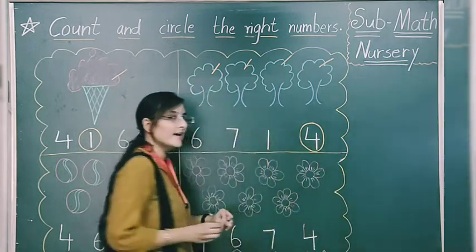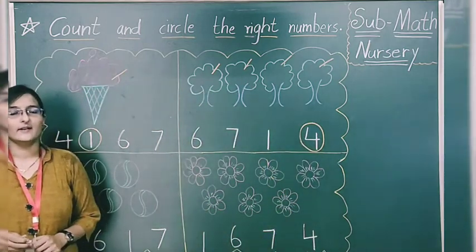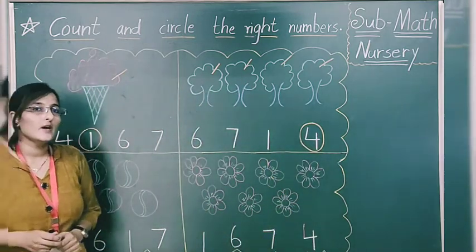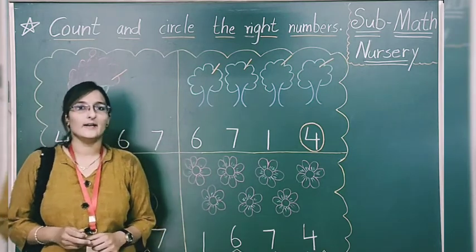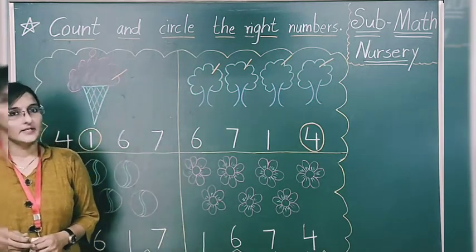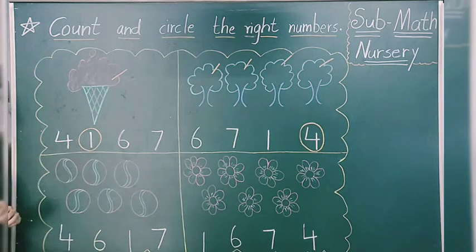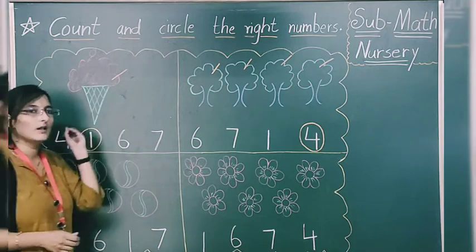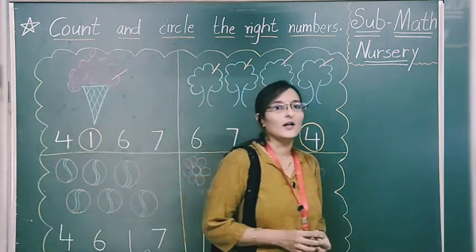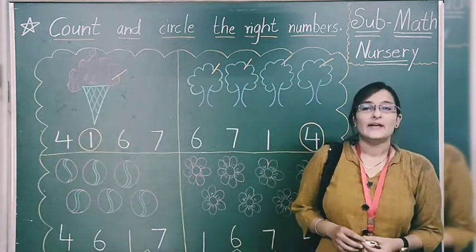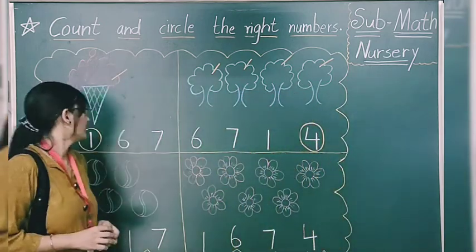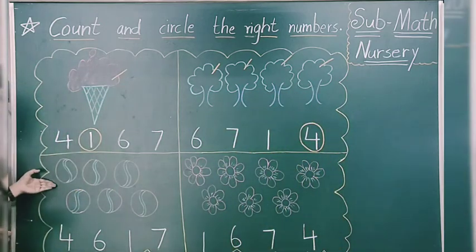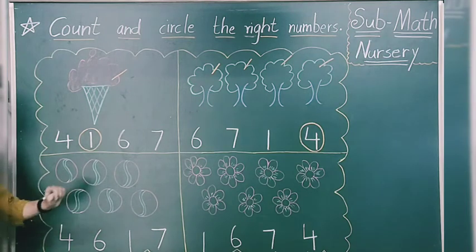Now you have done oral counting with me from 1 to 10, so you are now recognizing the numbers. Moving to our next point — what is this? Balls. You are playing at your home, bat ball. So what we have to do? We have to count these balls and we have to do circles.